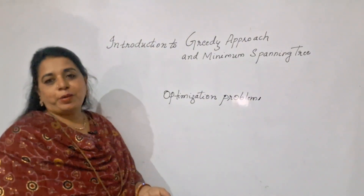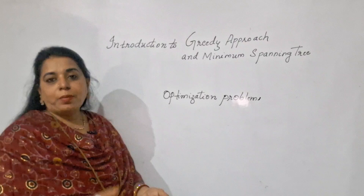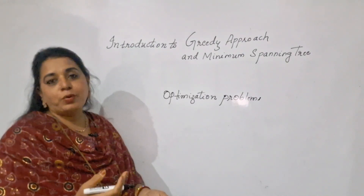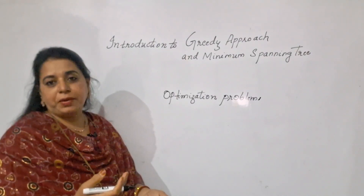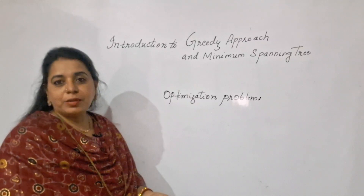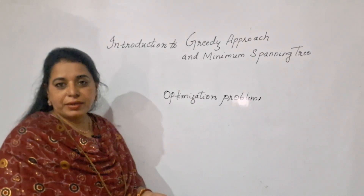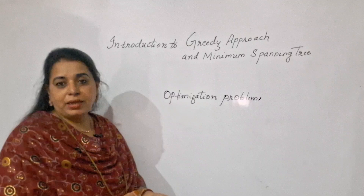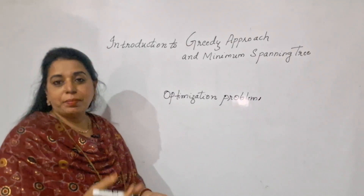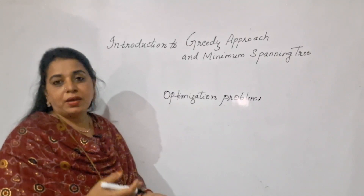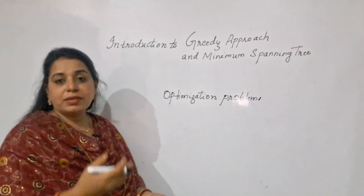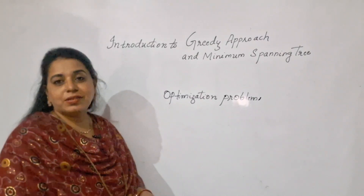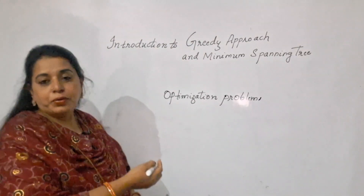Optimization problems always demand a minimum value or a maximum value. For example, an algorithm to find the shortest path tries to find the minimum cost, and the knapsack problem tries to find the maximum profit. Wherever a minimum or maximum requirement exists, we make use of the greedy approach.